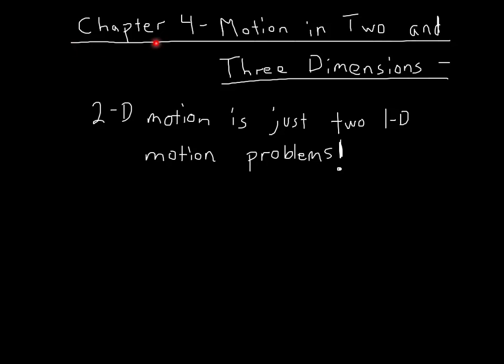Chapter four: motion in two and three dimensions. The thing to remember about this chapter is that 2D motion and 3D motion are really just doing two or three one-dimensional motion problems. We already have these four equations of constant acceleration motion that we use for 1D motion. We just need to apply them twice to get 2D.